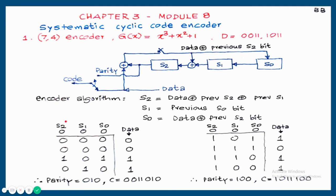Showing two examples. S2, S1, S0 are initially 0, 0, 0. Input bits are 0, 0, 1, 1. S2 = data + previous S2 + previous S1 = 0 + 0 + 0 = 0. S1 = previous S0 = 0. S0 = data + previous S2 = 0 + 0 = 0. Similarly, the next line is also all 0.